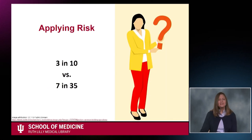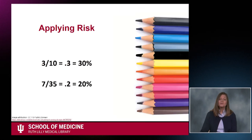It is fairly straightforward to determine higher risk when comparing 10, 100, and 1,000. However, what about 3 in 10 compared with 7 in 35? Which is the higher risk? You are correct if you chose 3 in 10. However, figuring this out was a bit more difficult. This is why risk is often presented in percentages. Because the denominator is the same — 100 — the percentages can easily be compared.